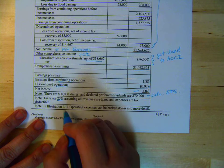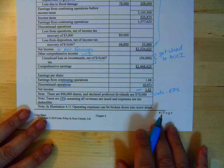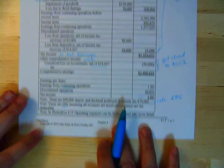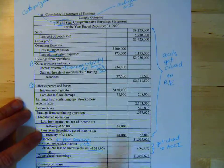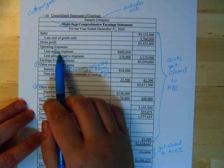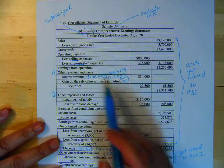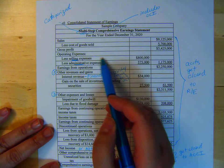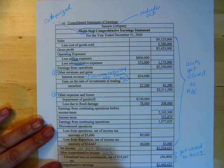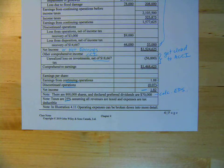If you look in Illustration 4.11, Operating Expenses can be broken down into more detail. So let's say you're looking for selling expenses and it doesn't have selling expenses as a single line item. Then maybe you're looking at breaking it down into more detail, in which case you list your selling expenses individually and then total them. You have to be flexible now, because we've moved away from intro. Now you have to start looking at different ways things are presented.